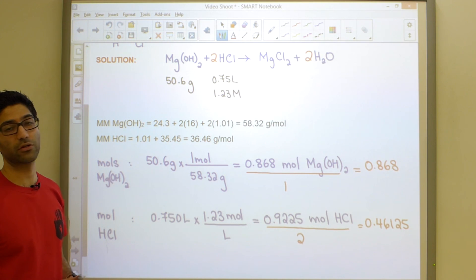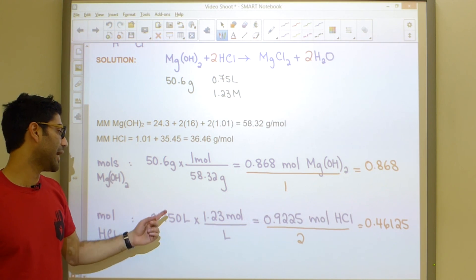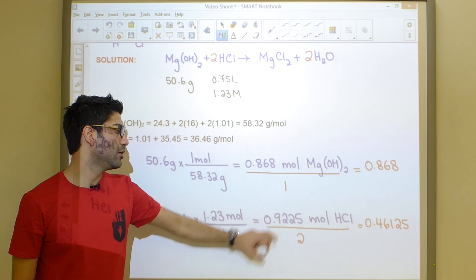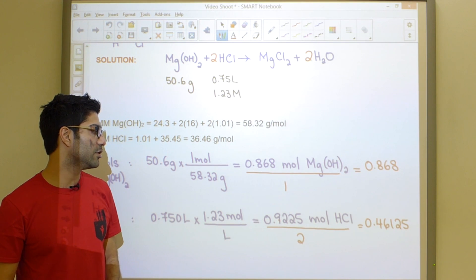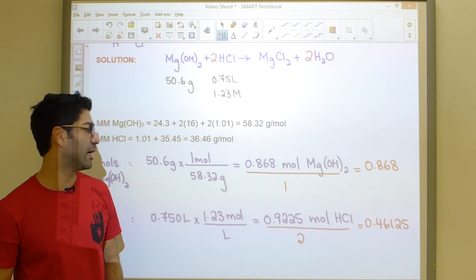Once you have the number of moles of each one of your two reactants, you simply divide each one by their corresponding stoichiometric coefficient, and whichever number is smaller is going to be your limiting reagent. In our case, it is hydrochloric acid. And we're going to use that value. We're going to start our problem using that value right there, 0.9225 moles.